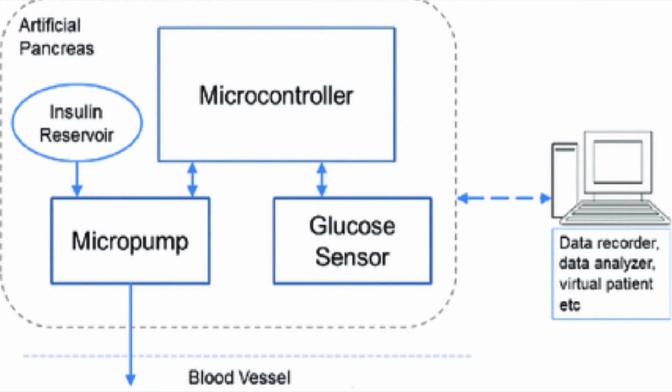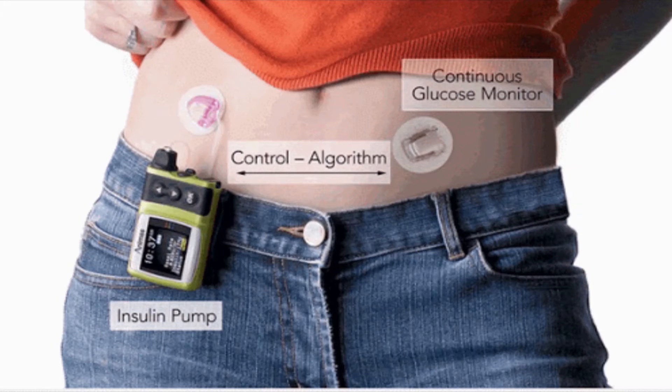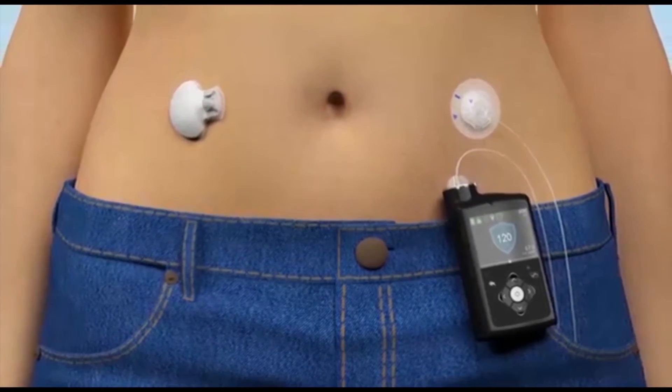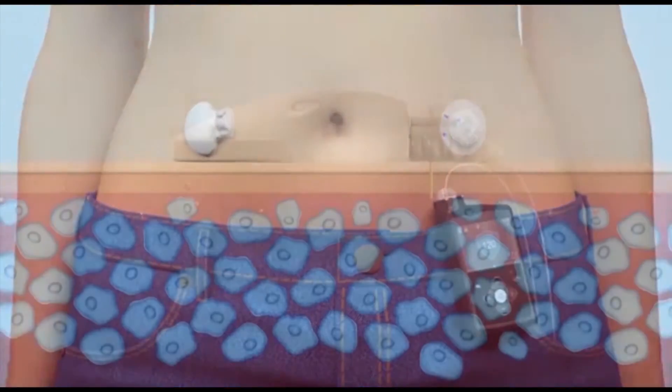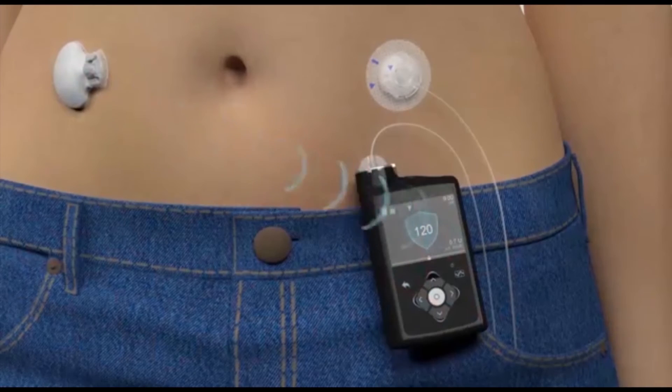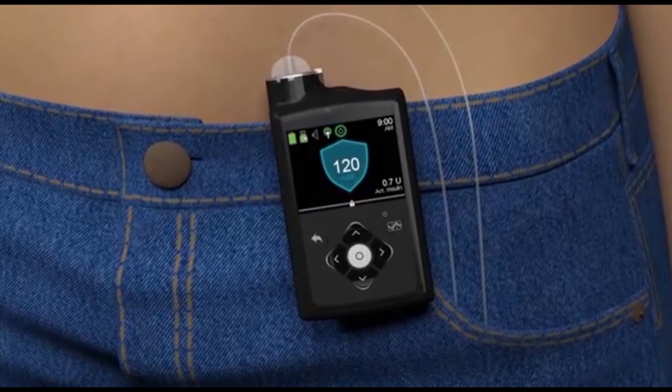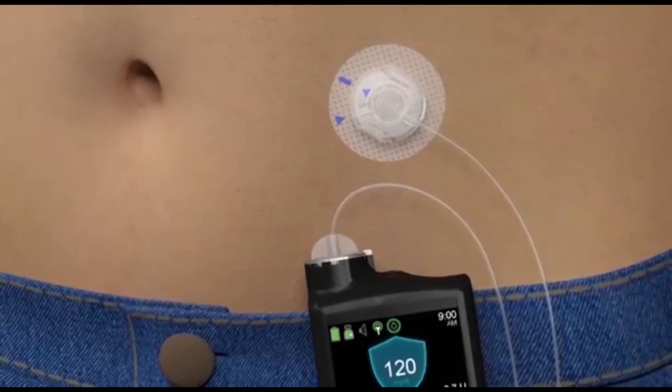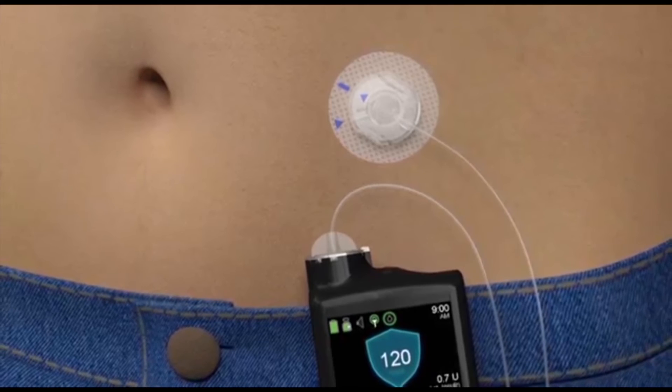The artificial pancreas consists of 4 parts. There is a glucose sensor and a transmitter that measures the glucose levels every minute. It transmits the information to a receiver that displays the glucose levels of the patient. This is connected to a smartphone which calculates how much insulin is needed. Then via Bluetooth, the smartphone tells the insulin pump to release the proper amount of insulin to the patient.